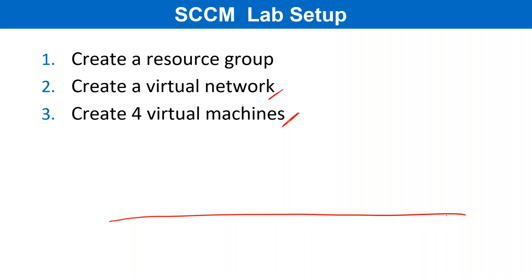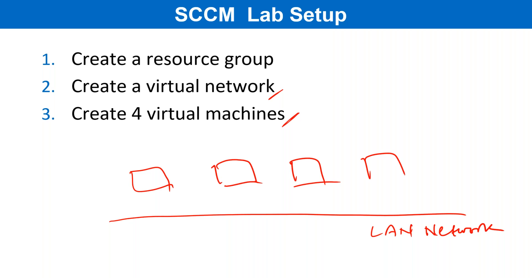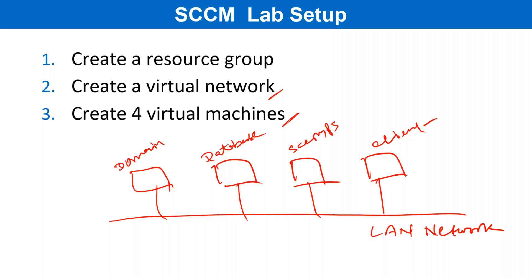So it will be like this: we will have a LAN network, and then we will have four virtual machines, and all these virtual machines will be connected to the same LAN network. The first virtual machine name will be Domain, the second will be Database, third will be SECM primary site server SECMPS, and the fourth one will be Client. So we have to perform all these tasks, let's do it step by step.